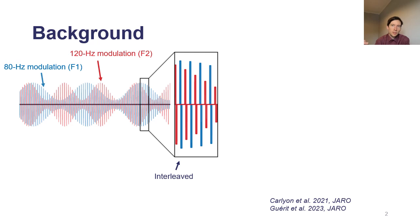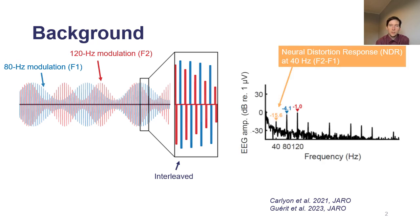Particularly, we've shown recently that with cochlear implant users, if you take a pulse train modulated at 80 Hz and interleave it with another pulse train modulated at 120 Hz, you can see a neural distortion response at 40 Hz in the EEG which is of thalamic cortical origin.